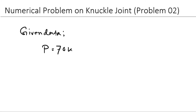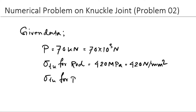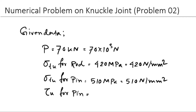Given data: P = 70 kN = 70 × 10³ N. σTu for rod = 420 MPa (N/mm²). σTu for pin = 510 MPa (N/mm²). τu for pin = 396 MPa (N/mm²).